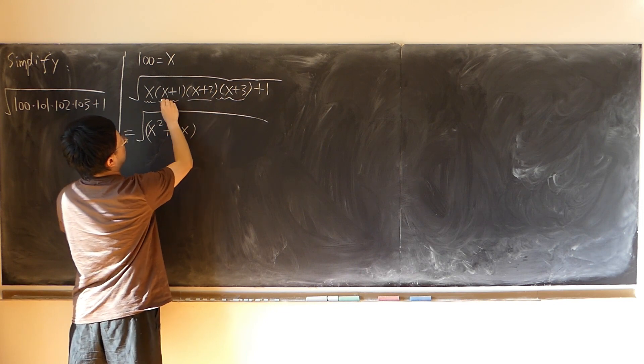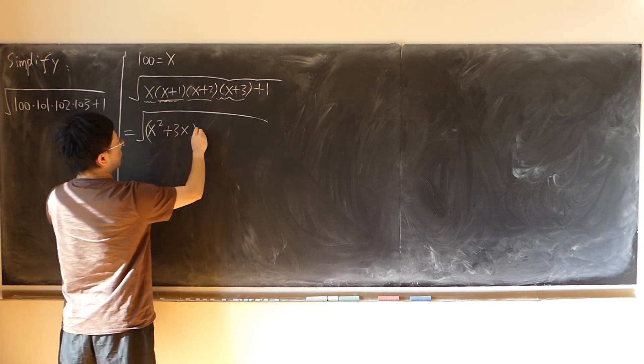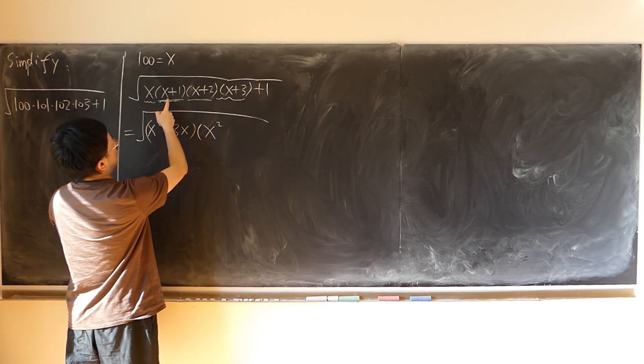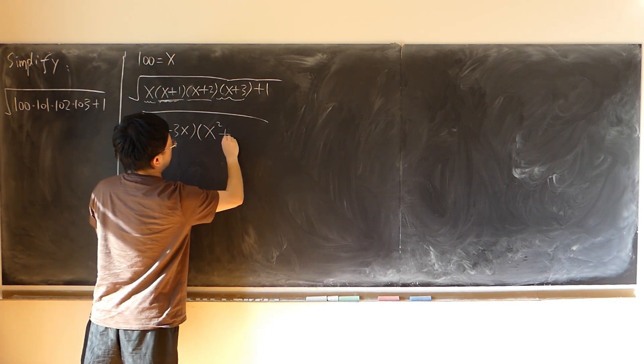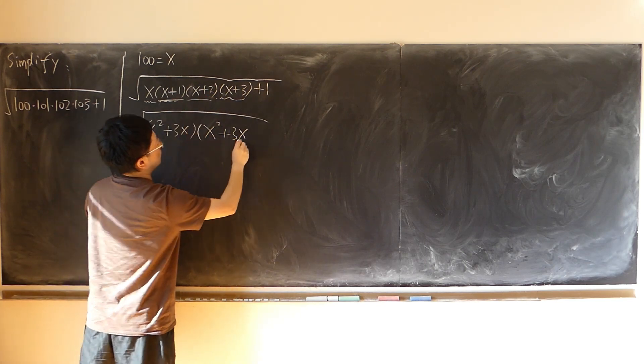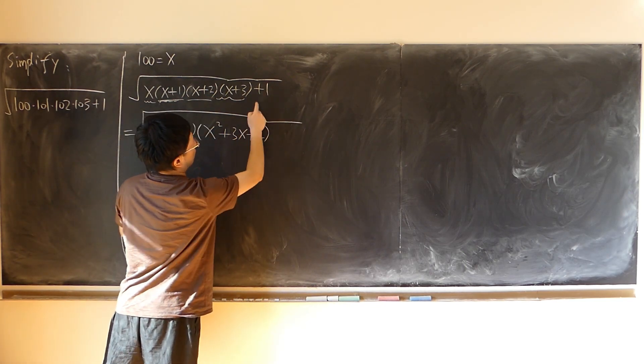Then we're going to do these two terms. That'll give me x squared first, then x times 2, then 1 times x, so that's 3x, and finally 1 times 2 gives me 2, and finally plus 1.